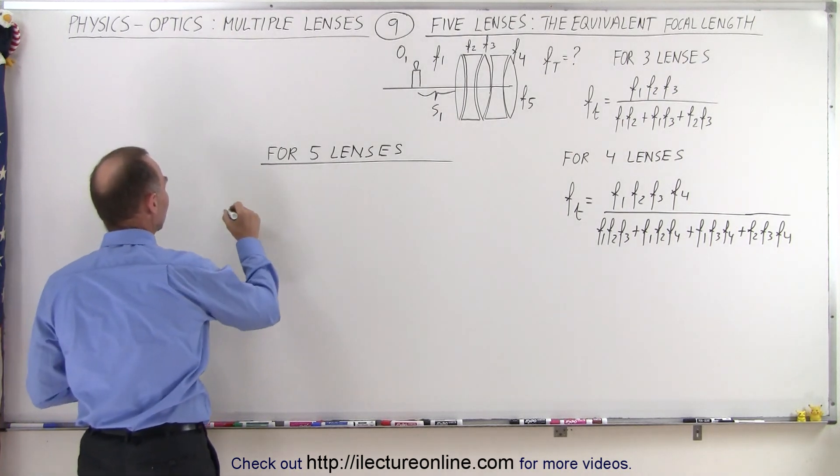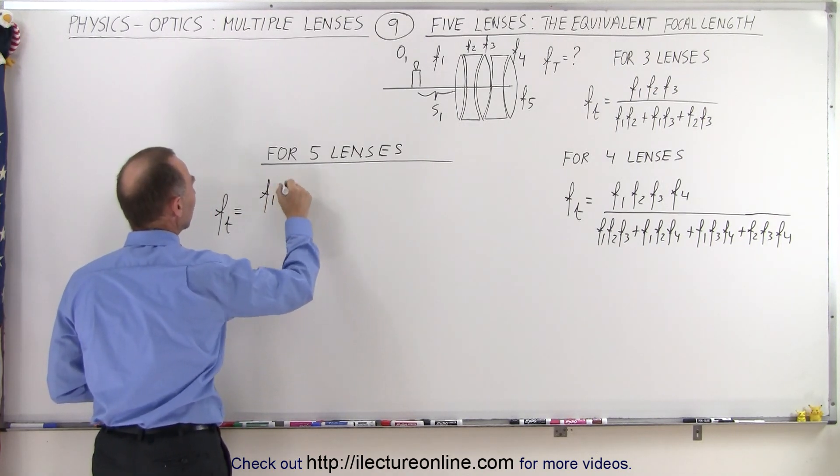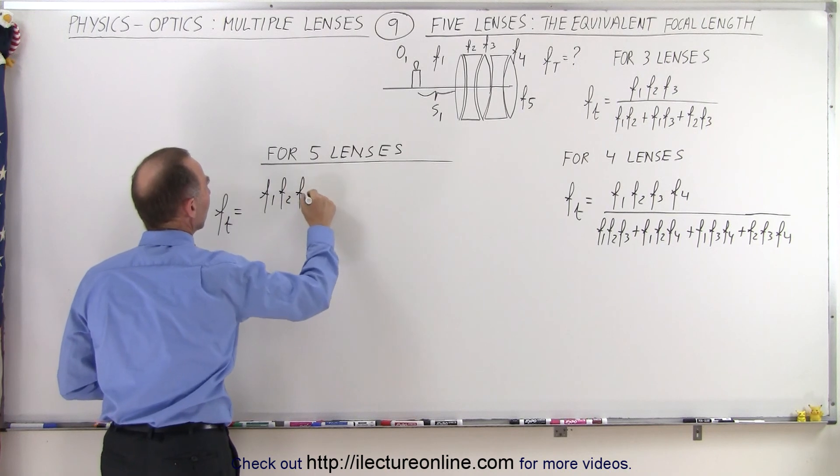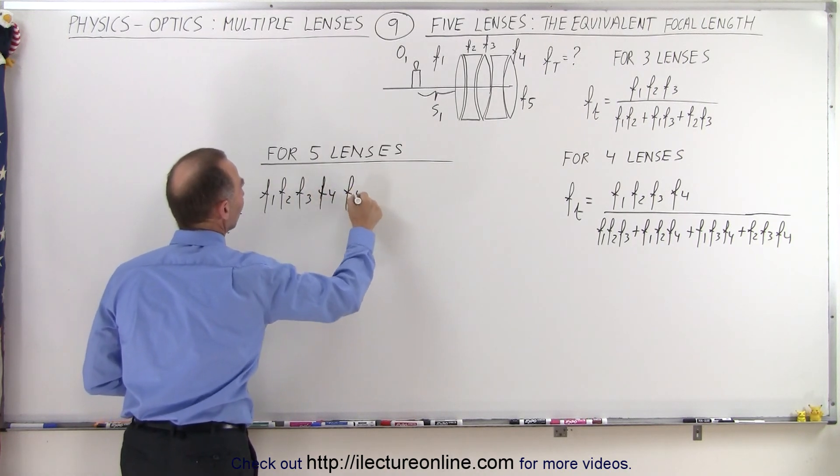So for five lenses, the equivalent or total focal length is going to be in the numerator. It's going to be the product of all of them: F1, F2, F3, F4, and F5.